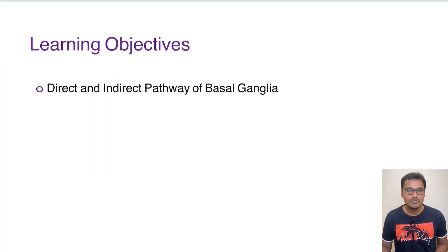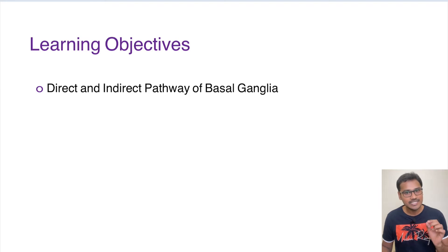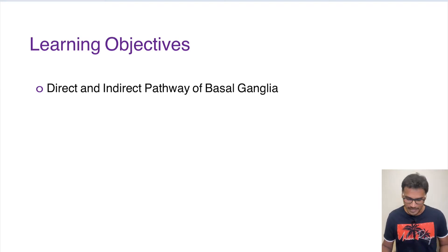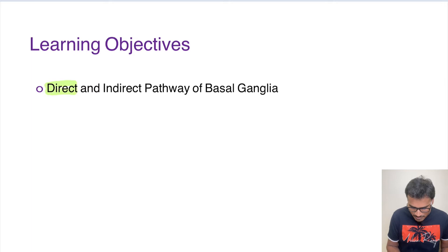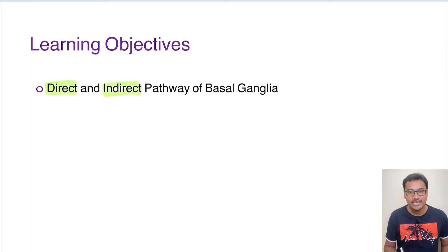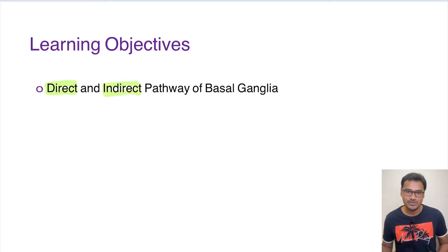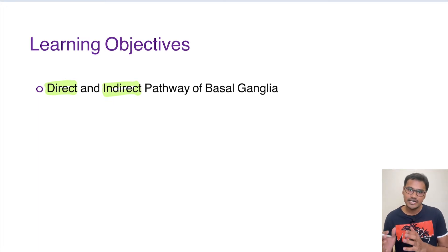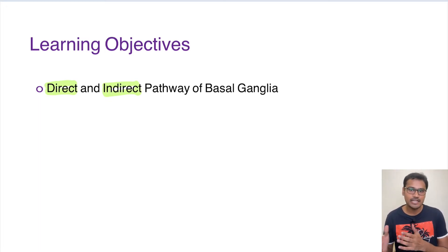The motor function of basal ganglia acts through two pathways: the direct pathway and the indirect pathway. These two pathways have to be kept in balance in a normal individual. Whenever this balance is disrupted, there will be an imbalance and there will be some motor disturbances.